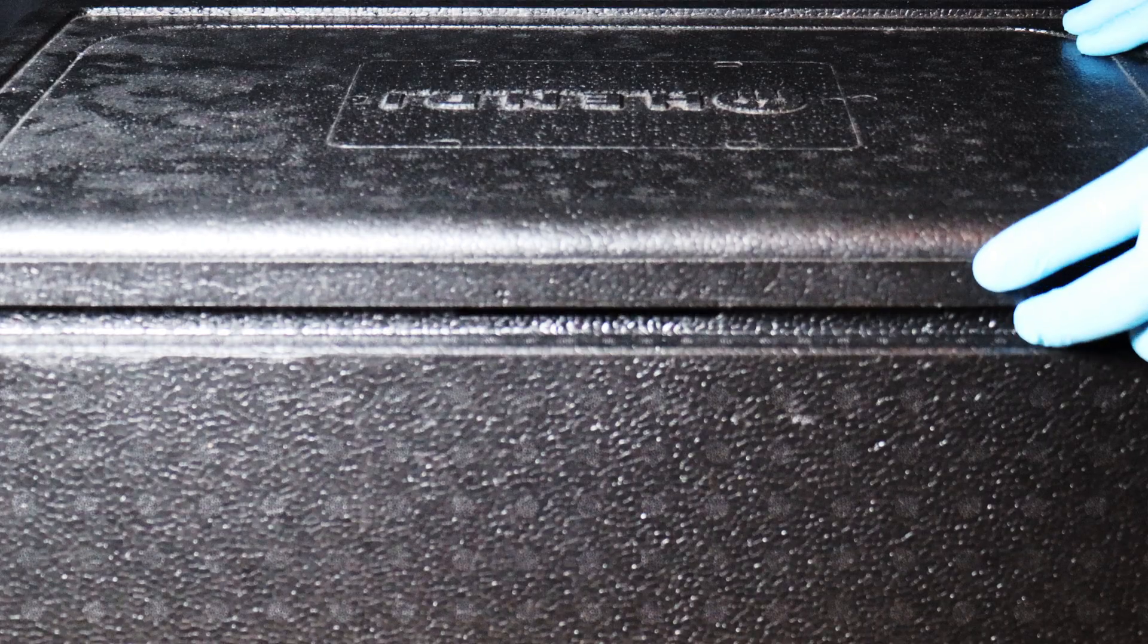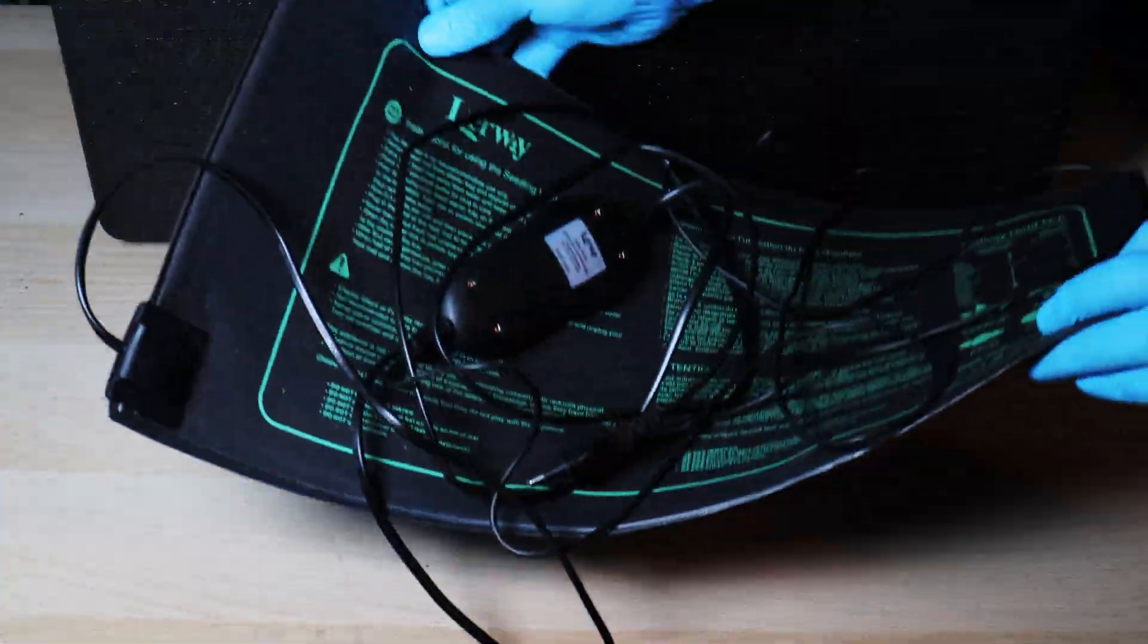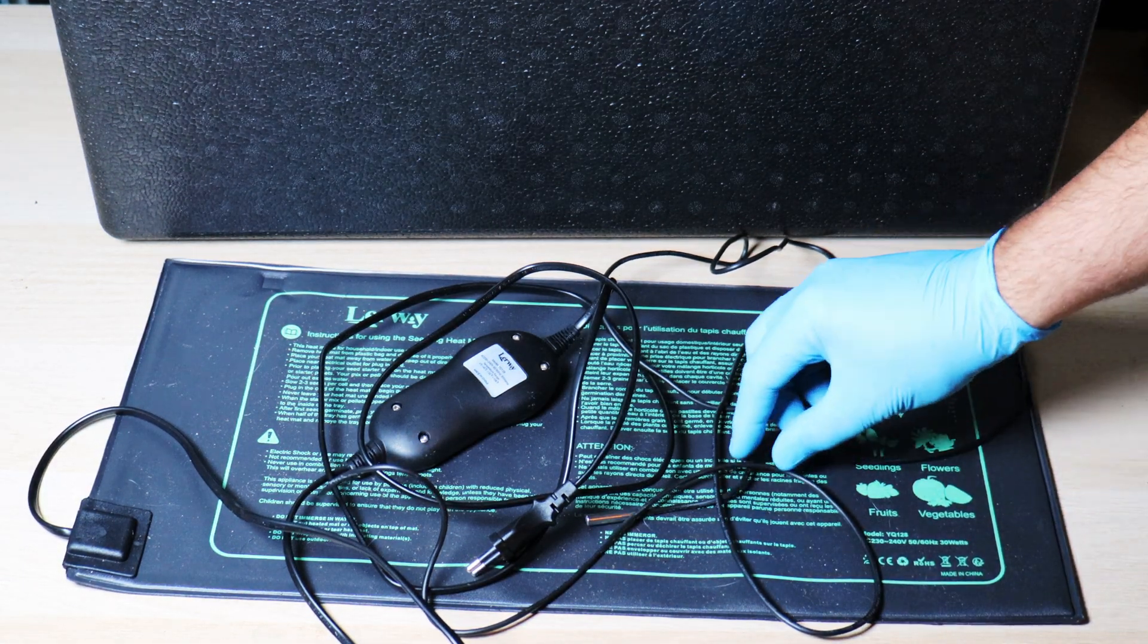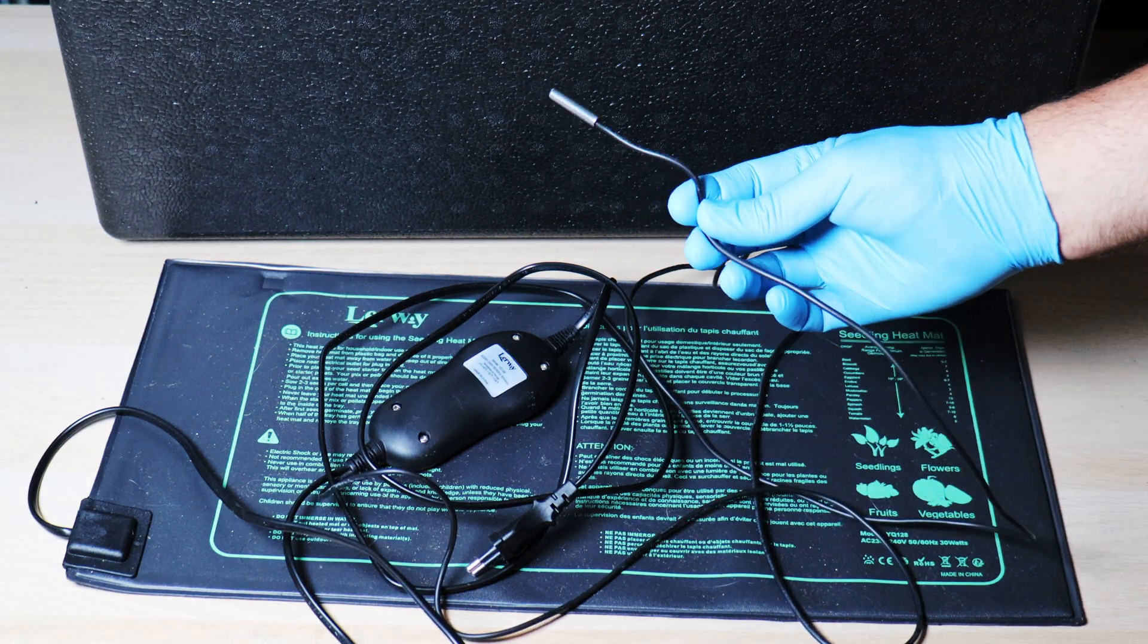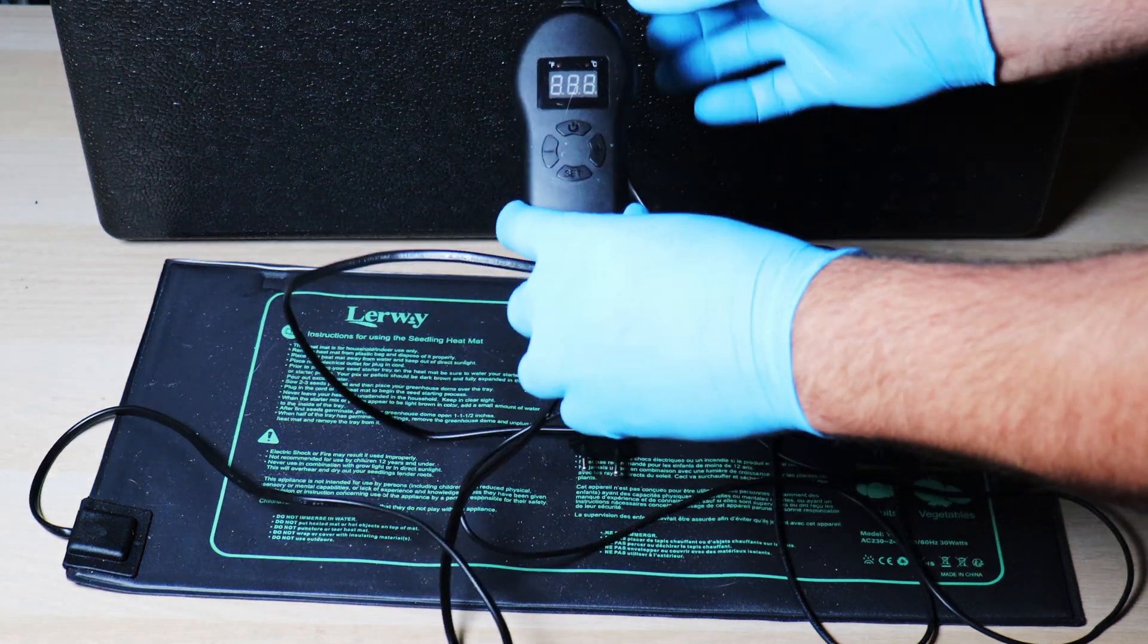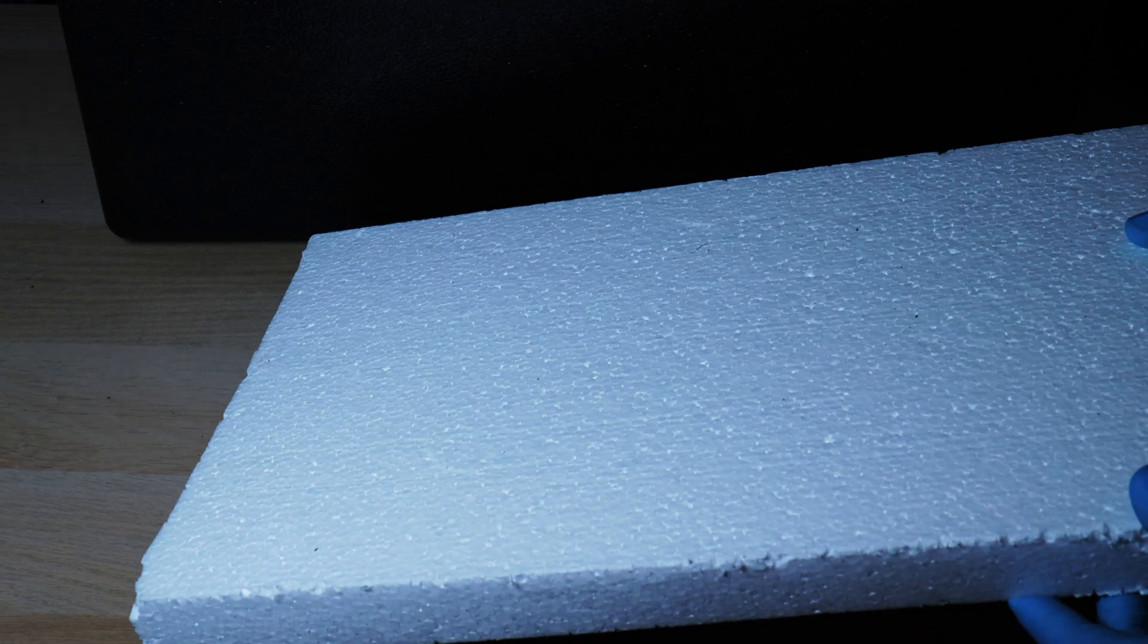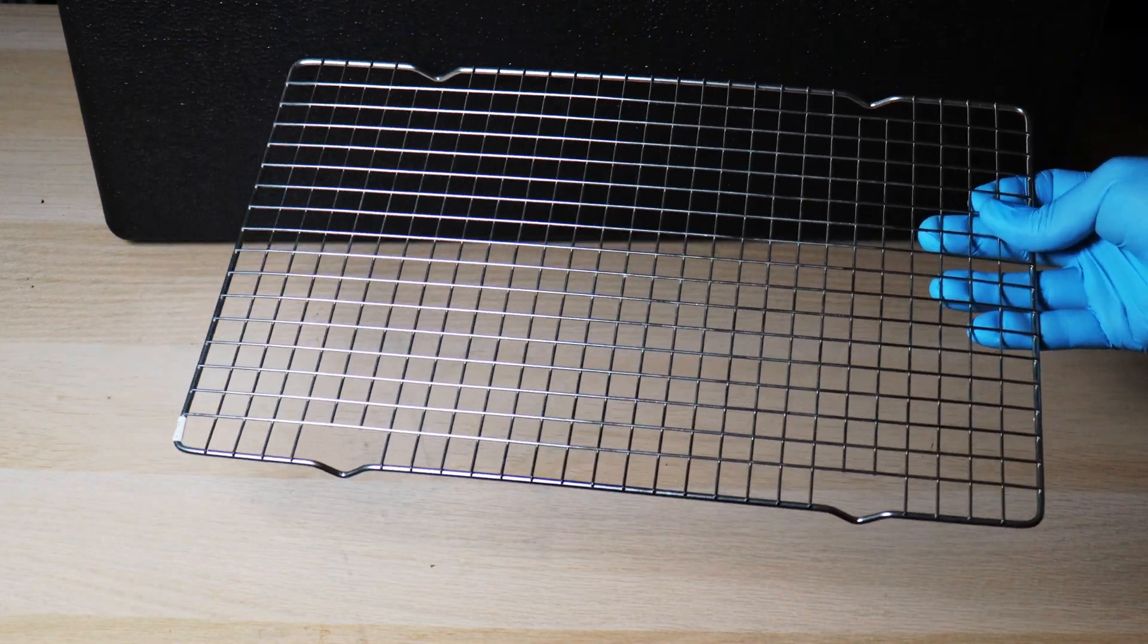So for this incubator we are going to need a foam cooler box, a heating mat that also includes a thermometer and a thermostat which allows you to set the temperature. You'll also need a piece of foam like this or similar, some kind of rack or trivet just like this one,